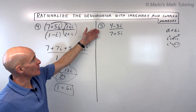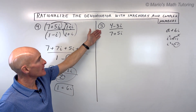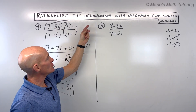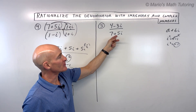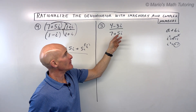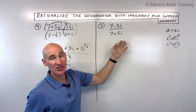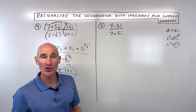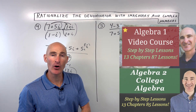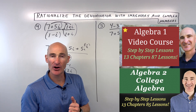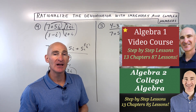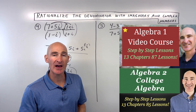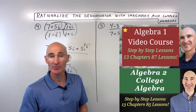See if you can do this last example, number five. It's interesting — the seven plus five i was in the numerator before, but now I've put it in the denominator. We still want to rationalize it. While you're working on that, if you want extra help with algebra one, algebra two, or college algebra, check out my video courses — links are in the description below.